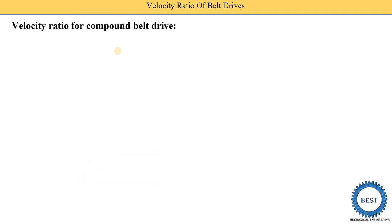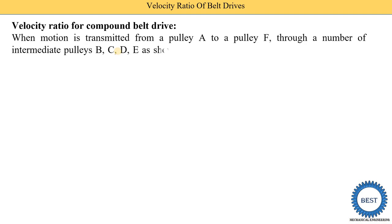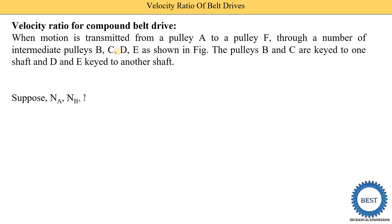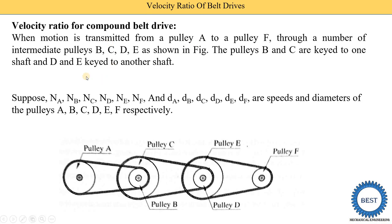Now we study the velocity ratio for compound belt drives. In a compound belt drive, a number of pulleys are there. In the figure, we have pulley A, pulley B, pulley C, pulley D, pulley E, and pulley F. Pulley B and C are installed on the same shaft but with different diameters. Pulley D and E are installed on the same shaft but with different diameters. The power is transmitted from pulley A to pulley F through the intermediate pulleys B, C, D, and E.